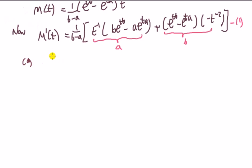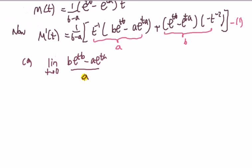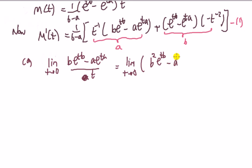We'll use L'Hôpital because it is way quicker. Looking at A first using L'Hôpital: the limit as t tends to 0 of (b·e^(tb) minus a·e^(ta)) over t equals the limit as t tends to 0 of (b²·e^(tb) minus a²·e^(ta)), and we can find that straight away — the answer is b² minus a².